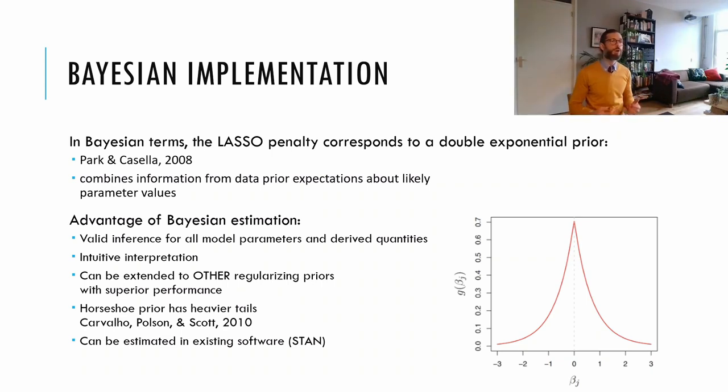And the reason I'm talking about Bayesian estimation is because it has several advantages over the frequentist approach. One key advantage for meta-analysis is that it provides valid inference for all parameters in the model and for derived quantities like i-square. Another advantage is the intuitive interpretation of the parameters.